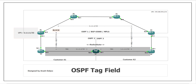Router 4 then sends the update to Router 6, and Router 6 advertises the networks to Router 7 via OSPF. After redistribution between the two OSPF processes, R7 sends this update back to R5, and R5 sends it to R1. Without any feature, R1 cannot understand that it originally advertised this route, so it re-advertises it to R4 — creating a loop: R4 to R6, R6 to R7, R7 to R5, and back to R1.